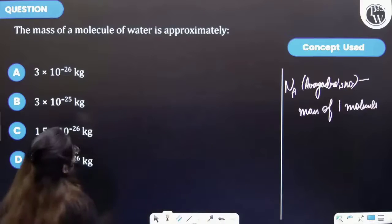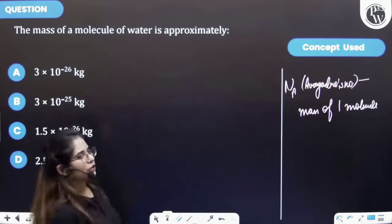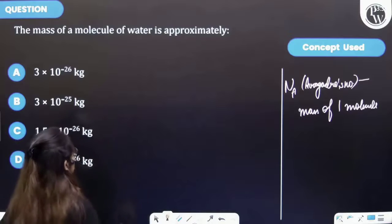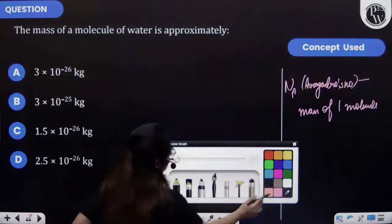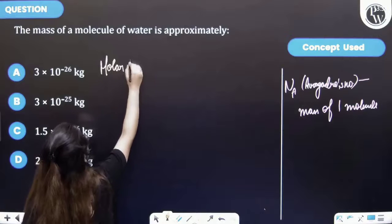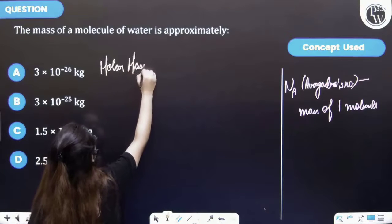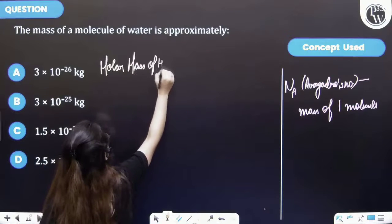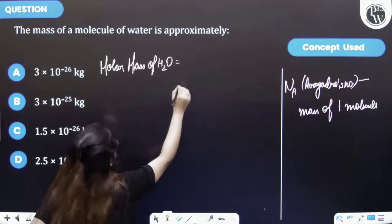So here we have to find the mass of a molecule of water. We know this thing that the molar mass of H2O is 18 gram per mole.